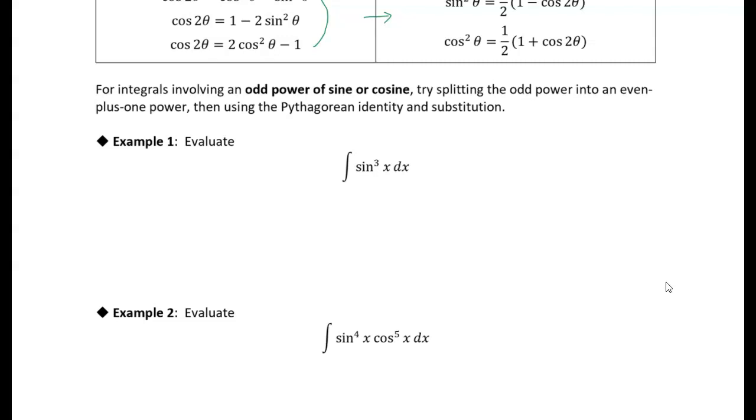So we have an odd power of sine, and what I'm going to do is I'm going to break this up into sine squared of x times sine of x. That's still sine cubed of x, but what that allows me to do is turn the sine squared into one minus cosine squared of x times sine of x.